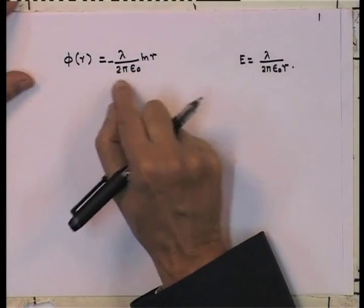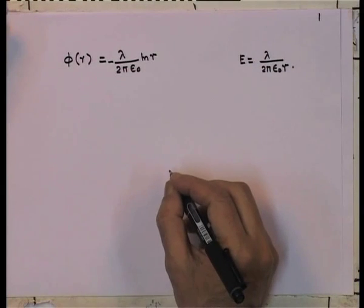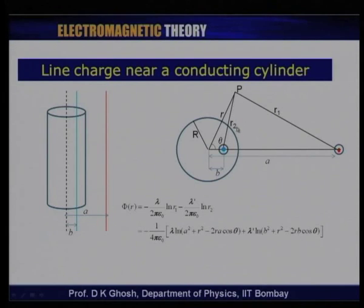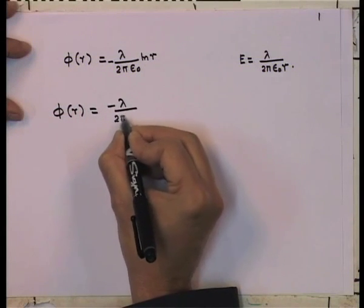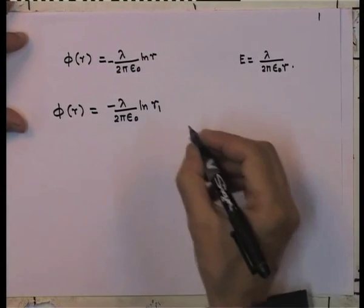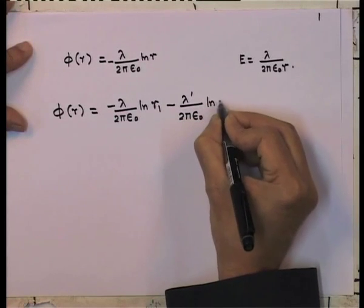Considering both the line charge and its image, the potential at an arbitrary point p — at distance r₁ from the original line charge and r₂ from the image charge — is φ = −λ/(2πε₀) log r₁ − λ'/(2πε₀) log r₂. You can always add a constant to such potential expressions.